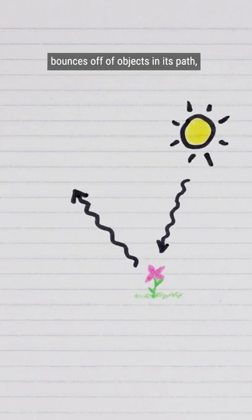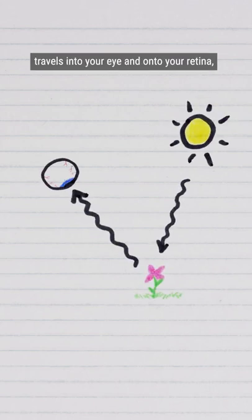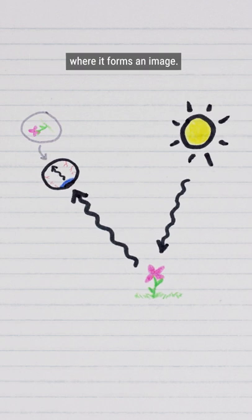Light travels outwards from a source, bounces off of objects in its path, travels into your eye and onto your retina, where it forms an image.